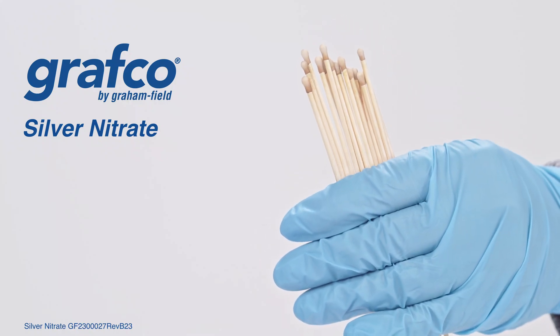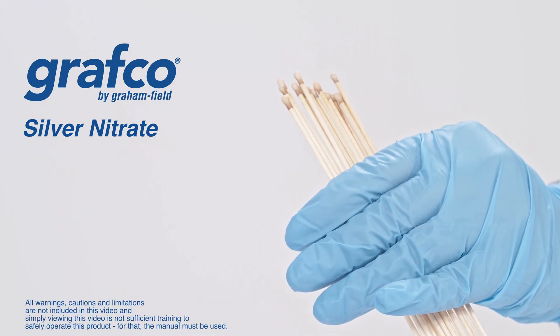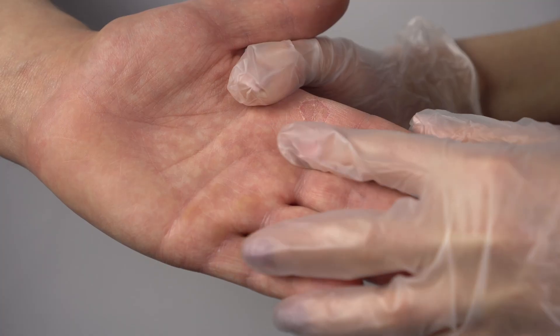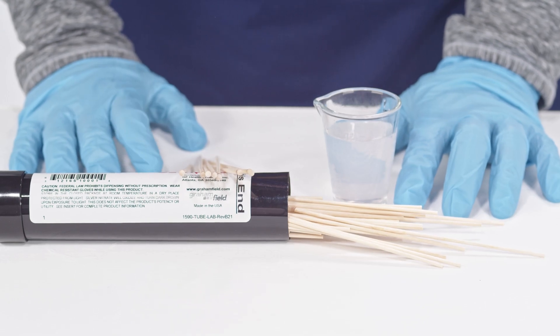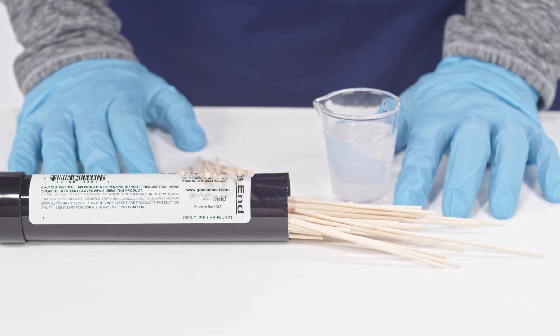Grafco silver nitrate applicators indicated for cauterization of skin or mucous membrane and for removing warts and granulated tissue. Grafco silver nitrate applicators come in 6, 12, and 18 inch applicators.